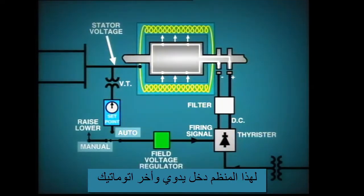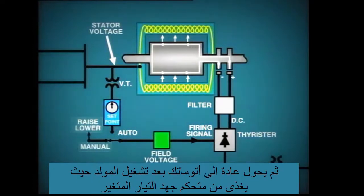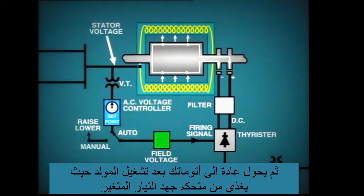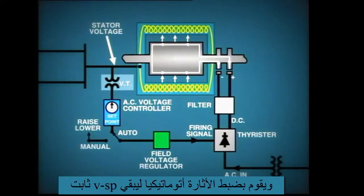The manual control disconnects the automatic function and allows the operator to directly control excitation. However, when the generator is in operation, the field voltage regulator is usually controlled from the auto position, that is, from the AC voltage controller. This controller monitors the generator bus output voltage through VTs, and automatically adjusts excitation to maintain the set point voltage.